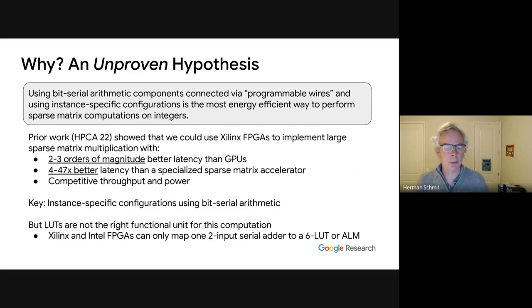Our prior work, which was just published at HPCA, showed that we could use Xilinx FPGAs to implement large sparse matrix multiplication with two to three orders of magnitude better latency than GPUs. And since GPUs aren't really sparse matrix accelerators, we also compared against an academic paper that was a sparse matrix accelerator, and there we achieved a 4x to 47x better latency.